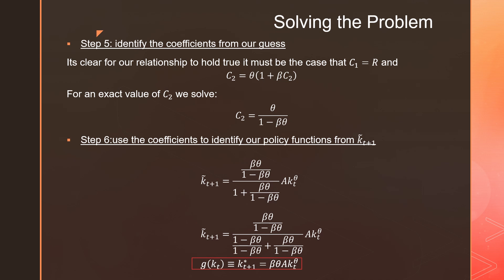So step number six is that we're going to use the coefficients from this estimate to identify our exact policy function. And that exact policy function is just done by taking C_2 and subbing it into k_{t+1} tilde. We just have a little bit more algebra and we get this thing all the way at the bottom, which is beta theta times our production function.